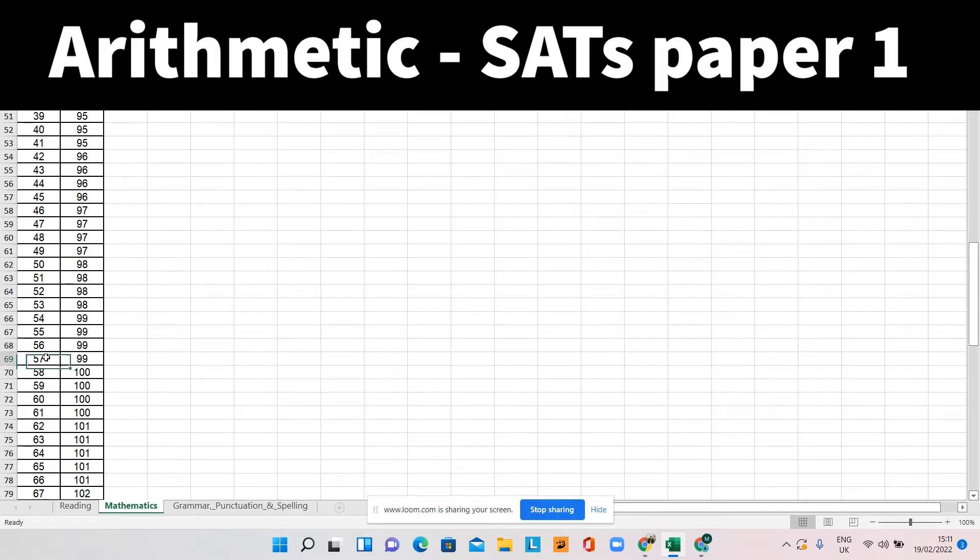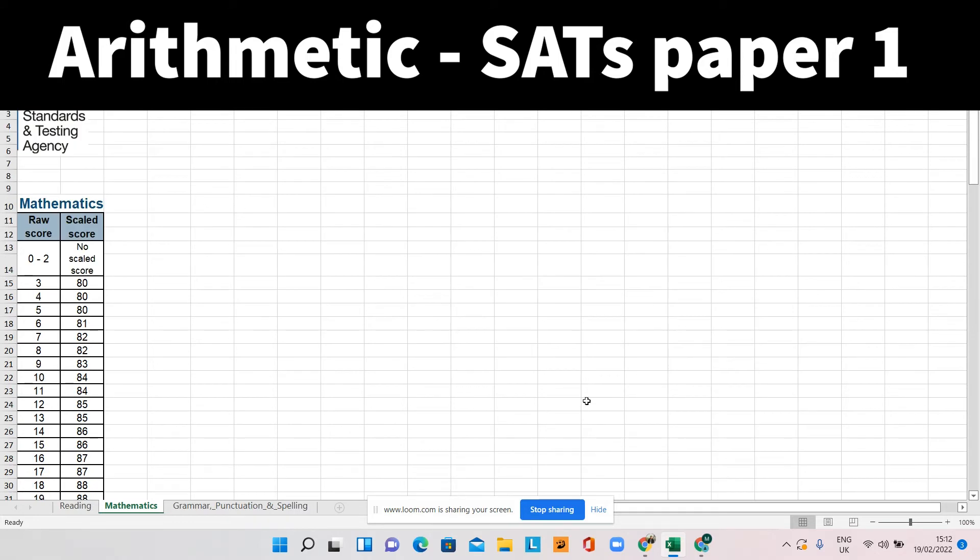Now on previous years, it's been lower. It's been 56. So somewhere between 56 and 58 is the marks required usually in order to pass their year six SATs test.